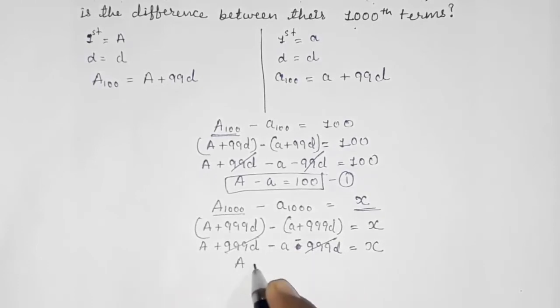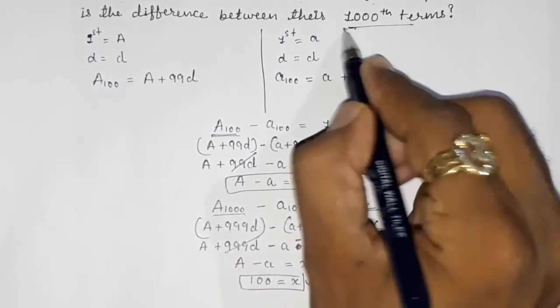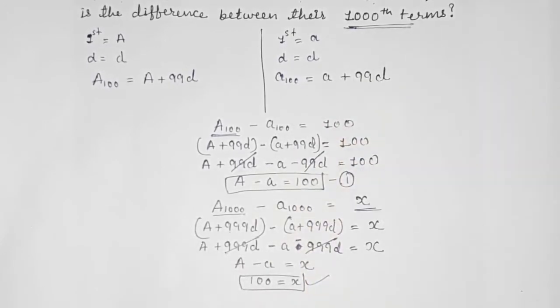Now these two will get cancelled because this is plus and this is minus. Now this A minus a is equal to x. Putting this first result here, A minus a is 100, so the value of x is 100. So the difference of 1000th term is also 100.